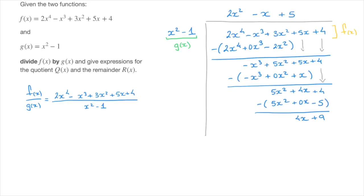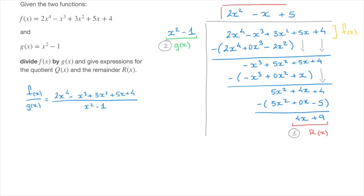We now stop. This polynomial, 4x plus 9, is the remainder function r of x. I know to stop here because the degree of this polynomial is less than the degree of g of x. The degree of r of x is 1, while the degree of g of x is 2. When we say degree, we mean the highest power of x in the polynomial. As soon as the remaining polynomial's degree is less than the divisor's degree, we stop — we've reached the remainder. The expression at the very top of the long division is the quotient function q of x.